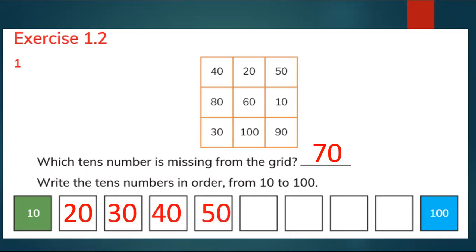50, 60, 70, 80, 90, and 100. So here are the tens. We put them in order from 10 to 100.